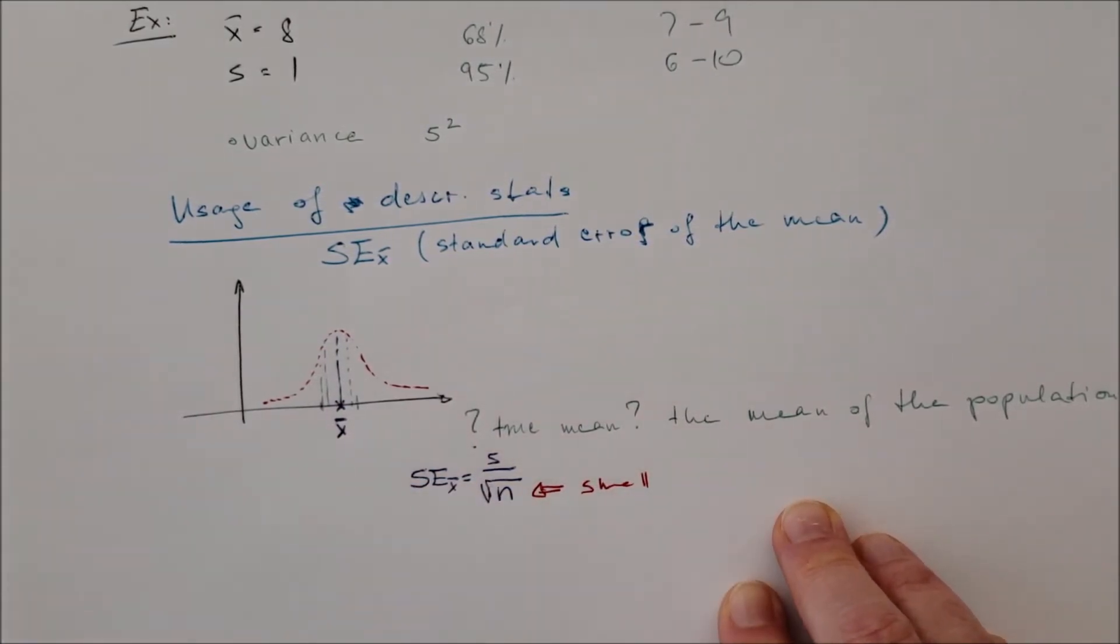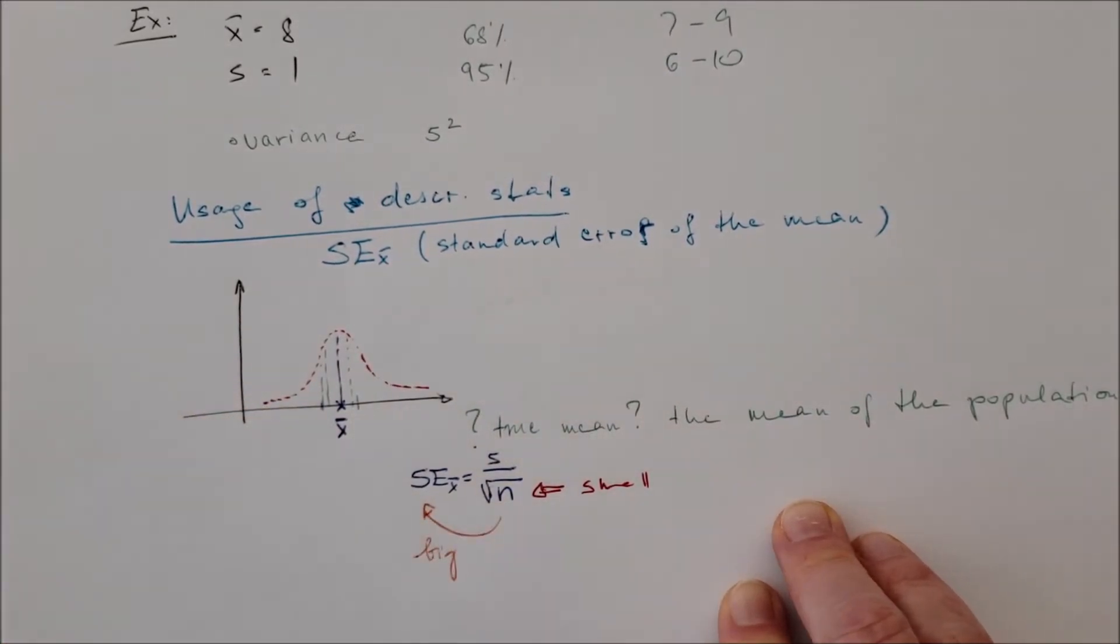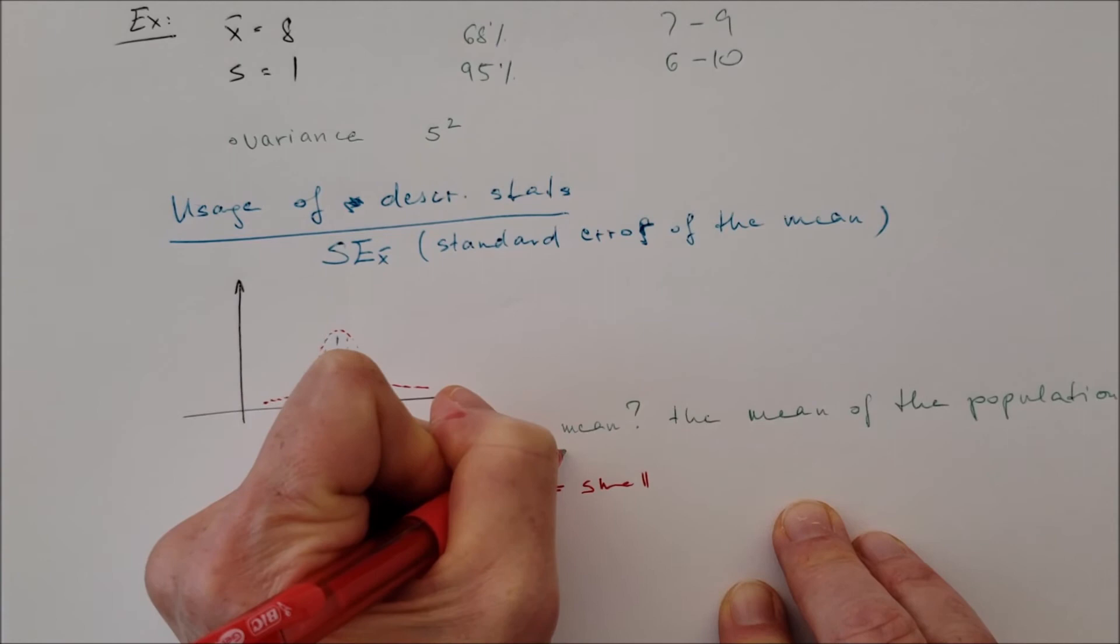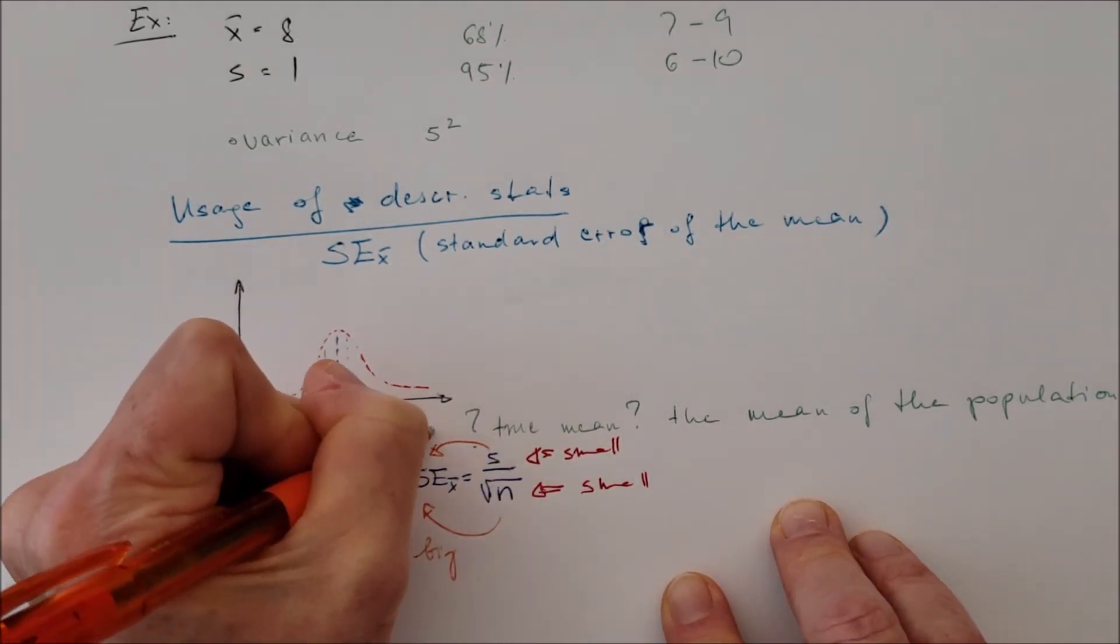Figuring out the standard error of the mean equals the standard deviation over square root of n. Here we see if the sample size is small, the standard error will be big. And if we have a small standard deviation, the standard error will be small too.